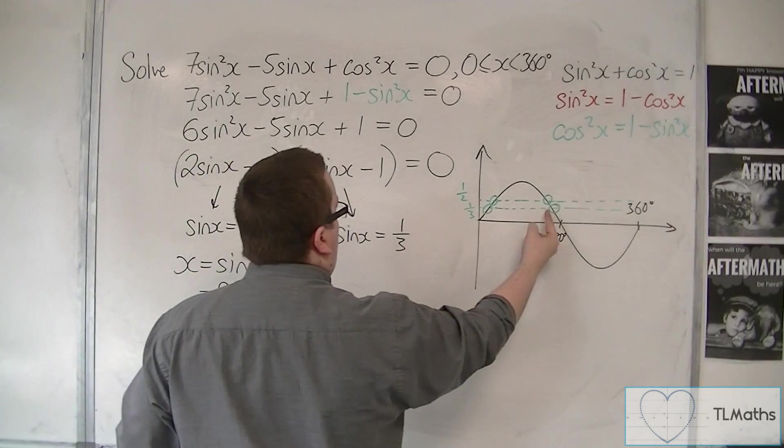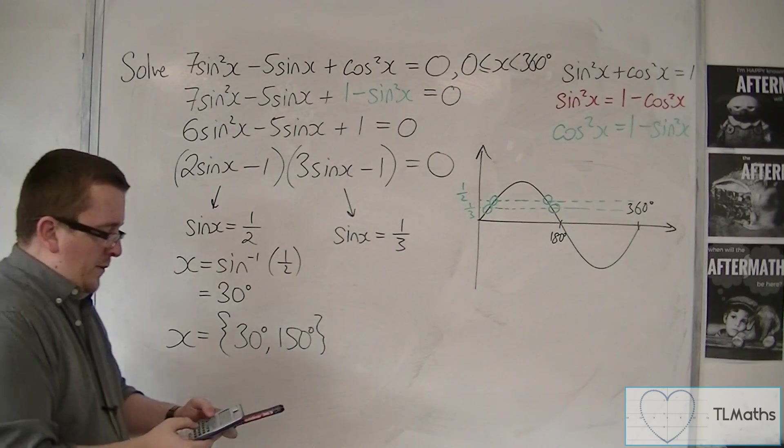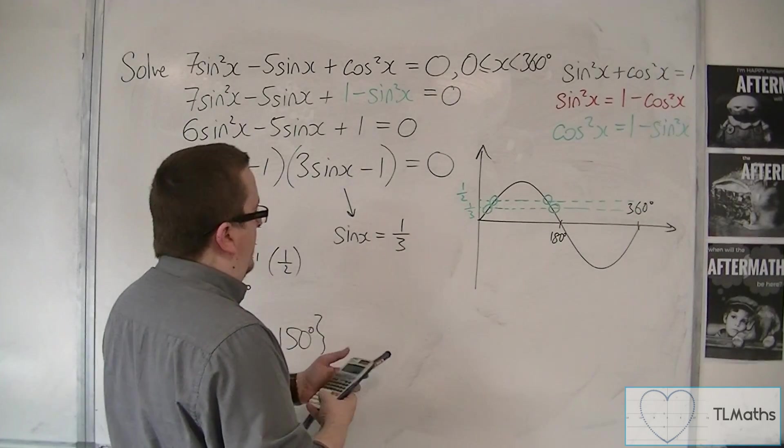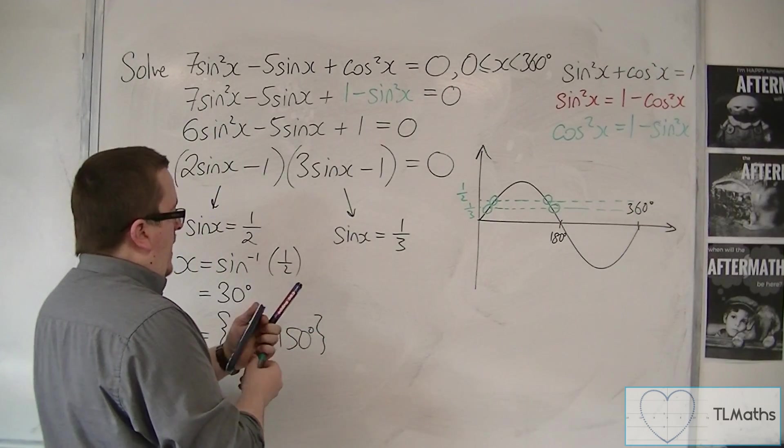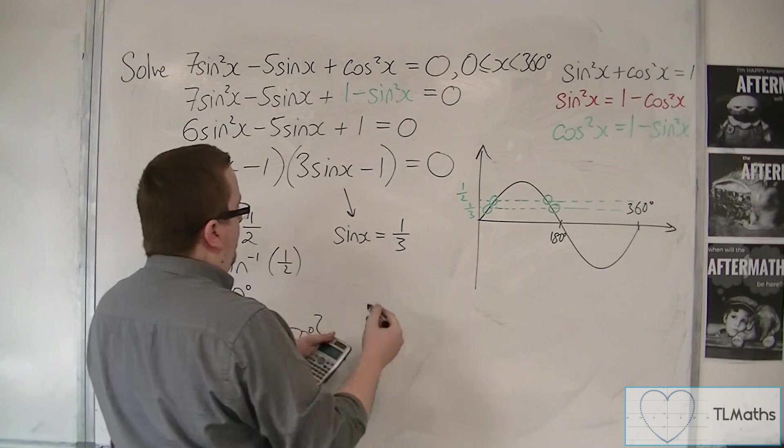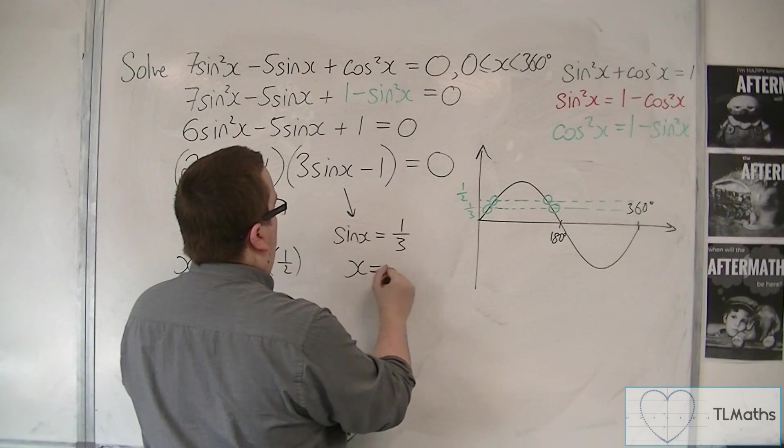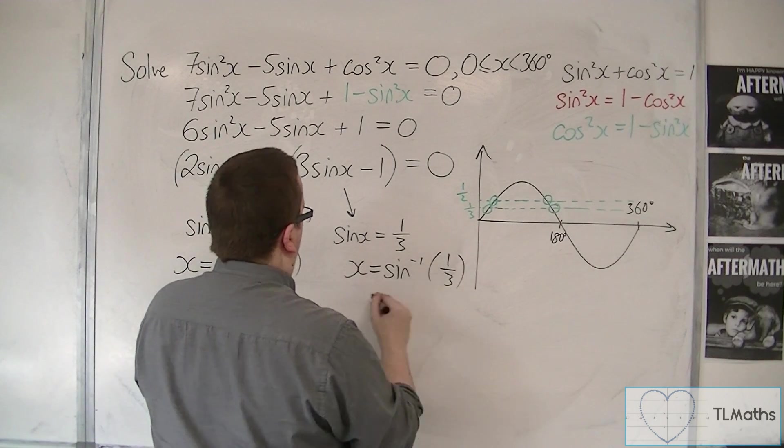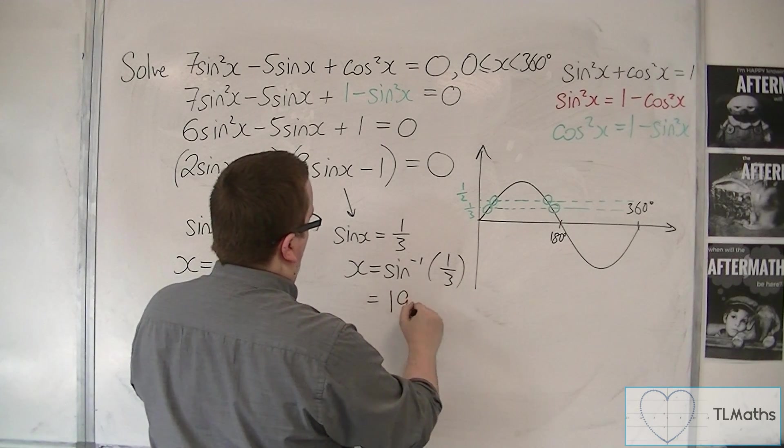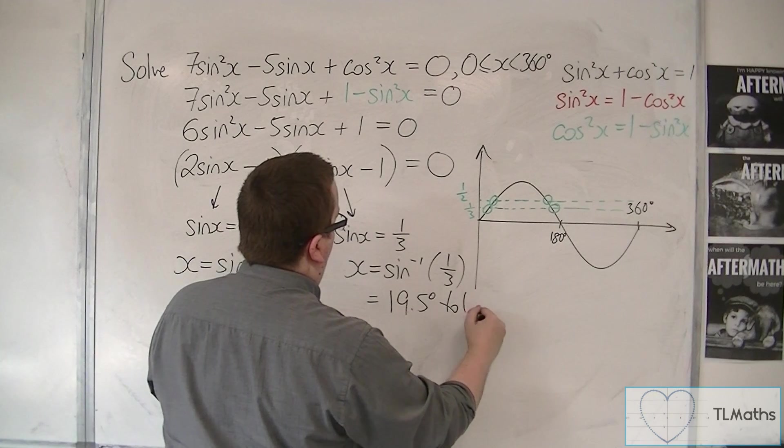Inverse sine of 1/3 gets me 19.5, so x = sin⁻¹(1/3) = 19.5 degrees to one decimal place.